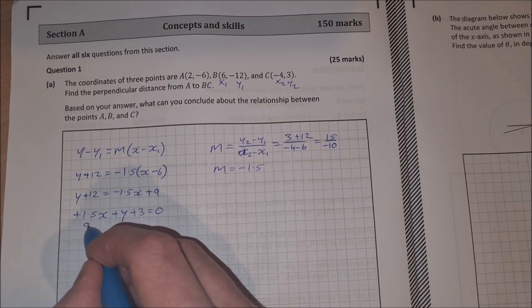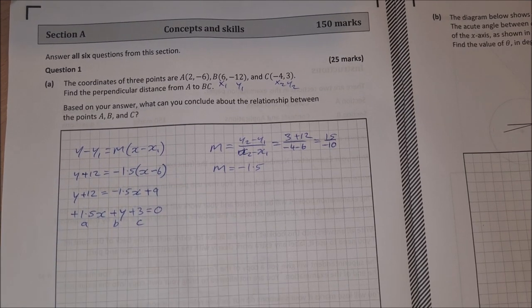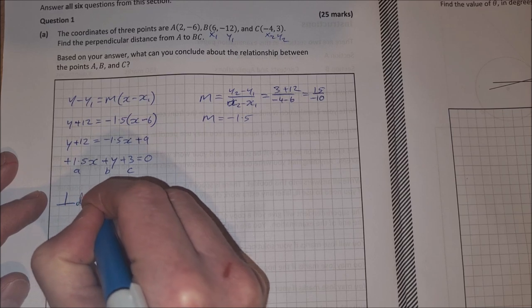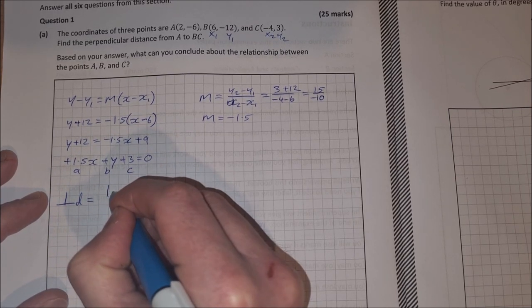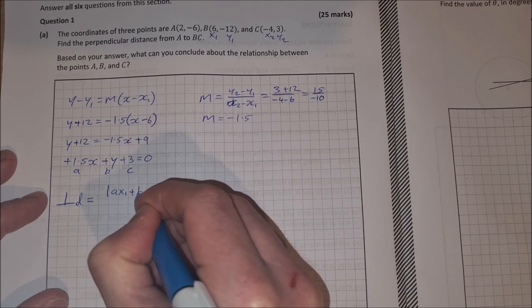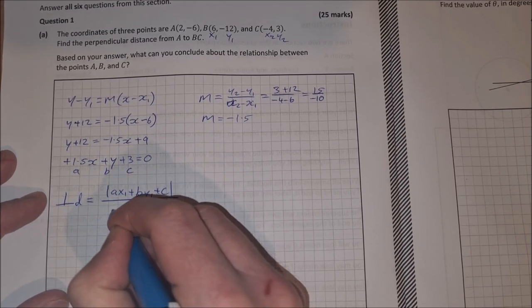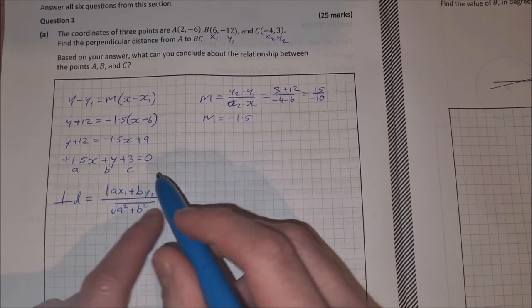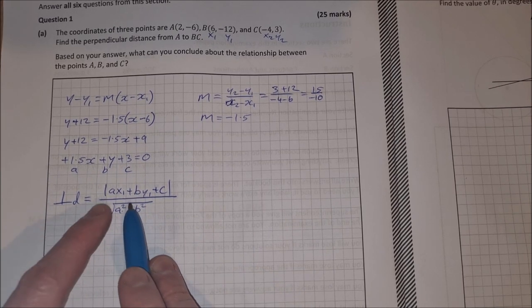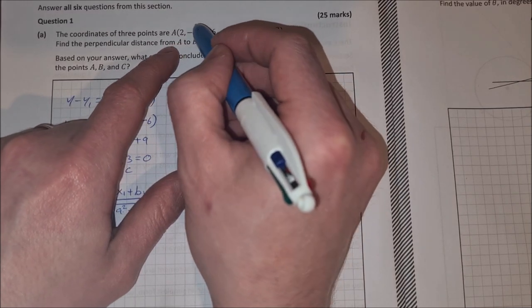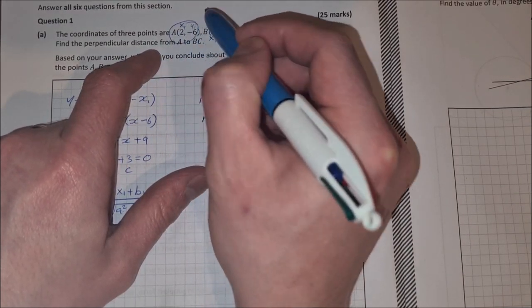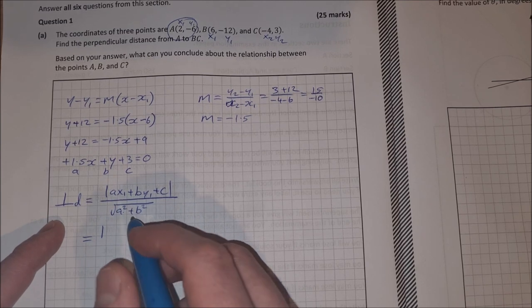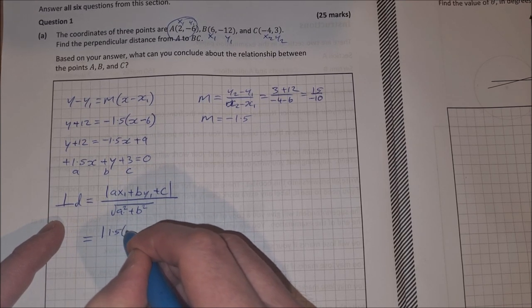This is now going to be my a, my b, and my c for the perpendicular distance from a point to a line formula. So the perpendicular distance is equal to, you'll find this in your log tables as well, the absolute value of ax1 plus by1 plus c over the square root of a squared plus b squared. Now a, b, and c are here: 1.5, 1, and 3. x1 and y1 then are these points here in A, so it's a new x1 and y1 for us.